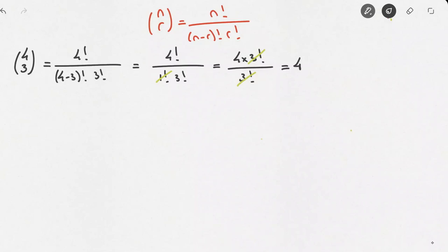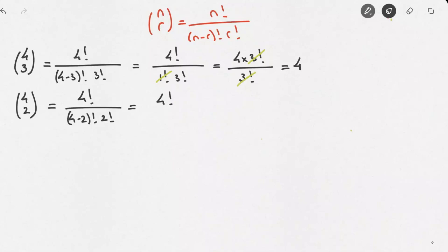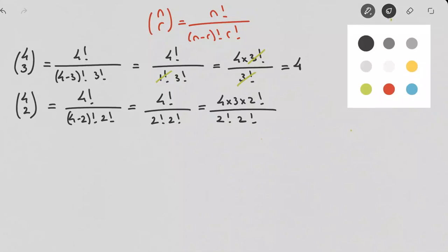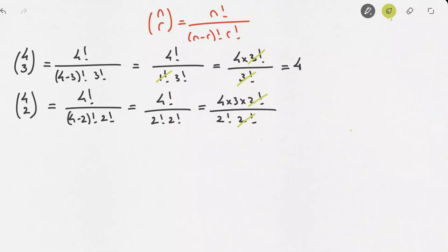Likewise, for C(4,2), this equals 4! over (4 minus 2)! times 2!, which is 4! over 2! times 2!. Writing 4! as 4 times 3 times 2!, we cancel one 2! from top and bottom, leaving 4 times 3 over 2 times 1. The 4 and 2 simplify, giving us 2 times 3, which equals 6.